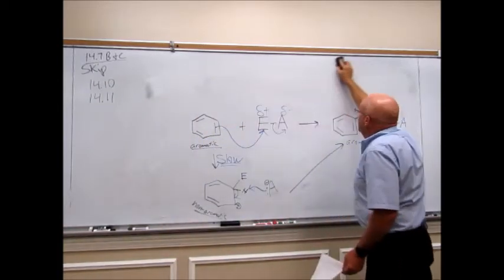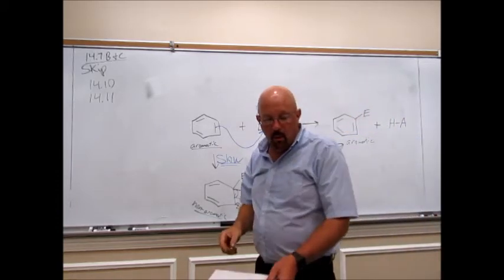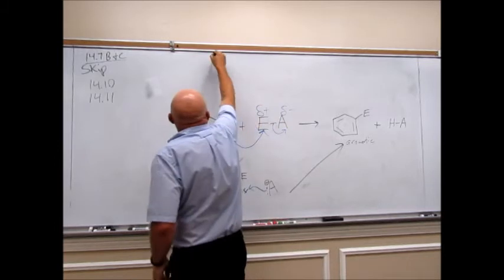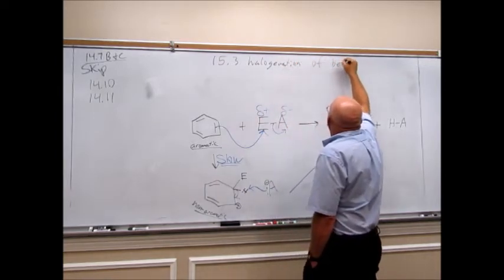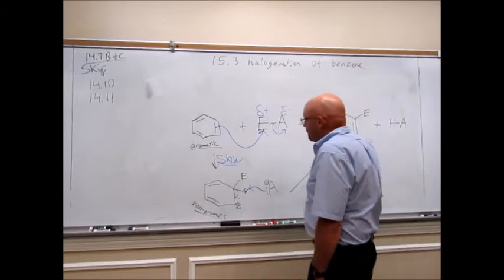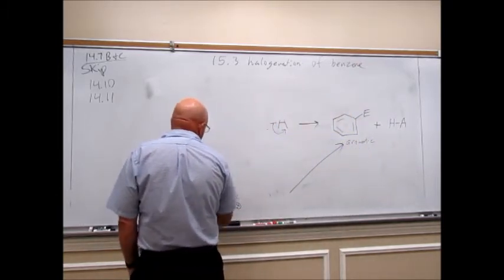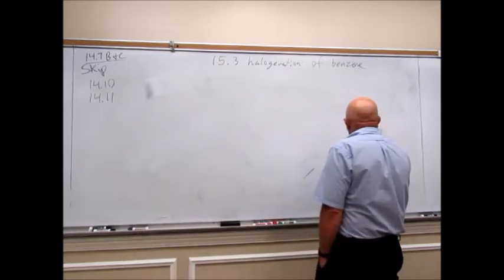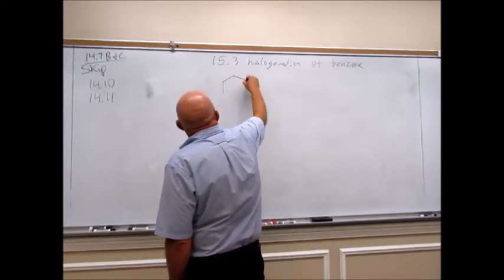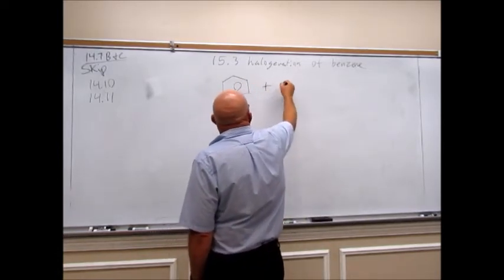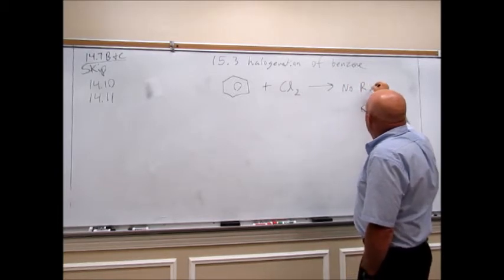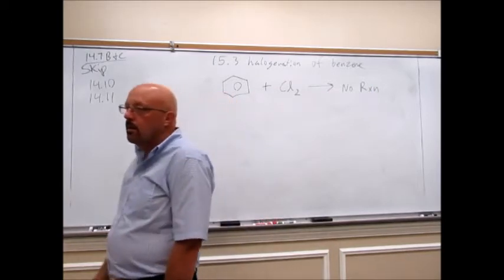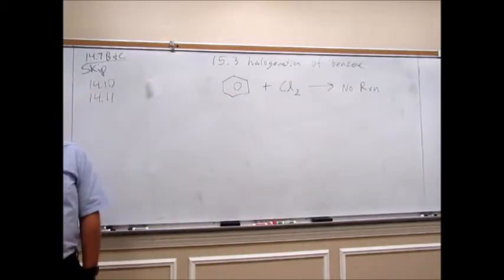The first electrophilic aromatic substitution we're going to look at is halogenation of the benzene ring. If we take benzene and add a halogen — say, chlorine, a chlorine molecule — we get no reaction. Nothing is going to happen because the benzene is just too stable; simply adding chlorine cannot get a chlorine atom onto that ring.